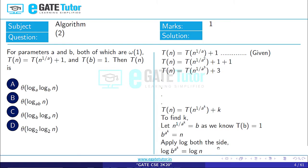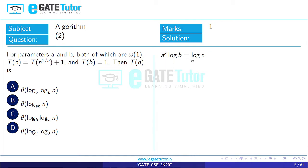Now we will apply log both sides. We will get log_b(a^k) equal to log n, a^k log b equal to log n, a^k equal to log n by log b. We will rewrite this equation as log_b(n) by using the logarithmic property.